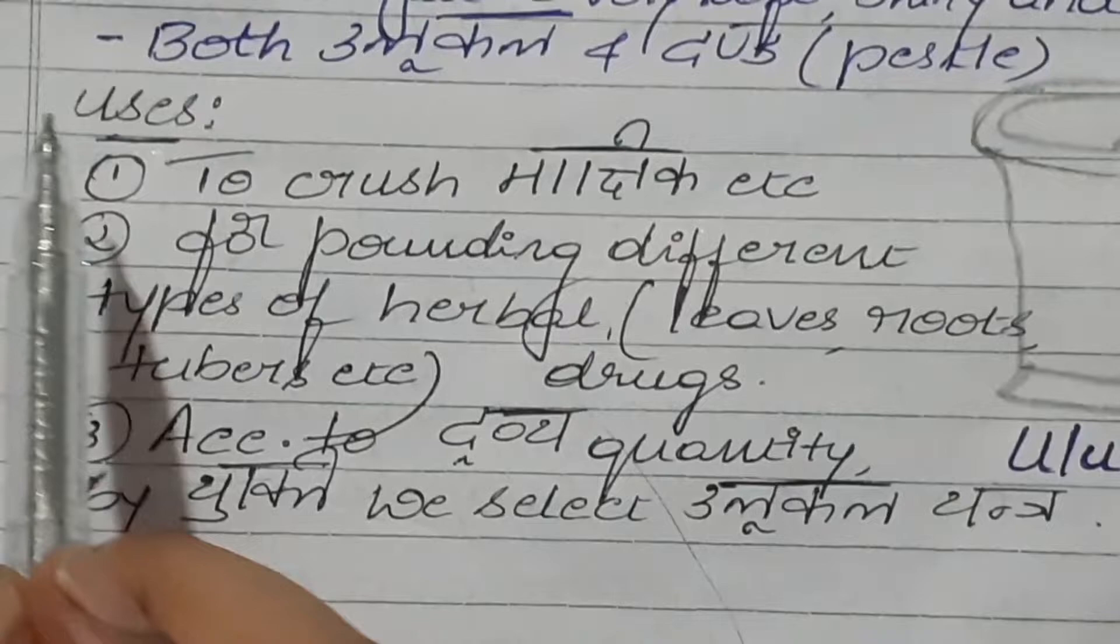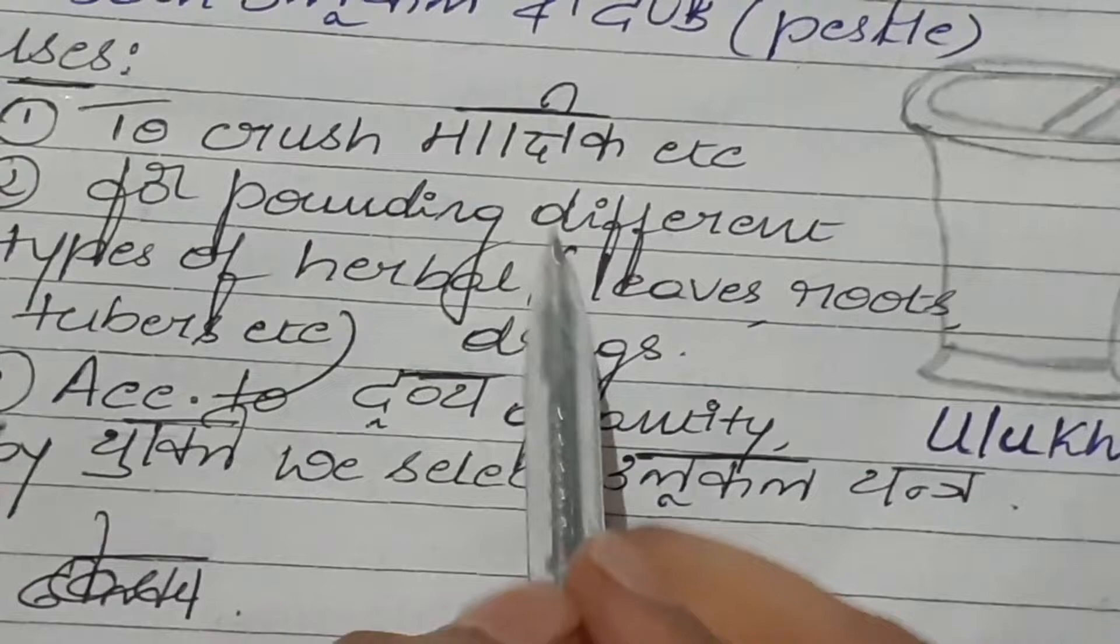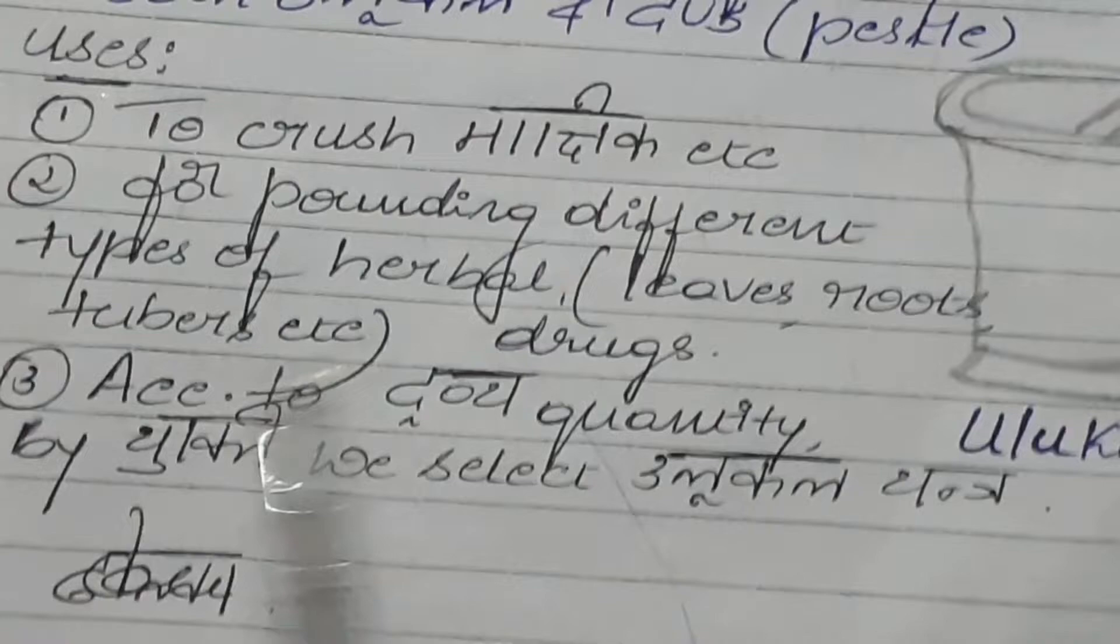Both Ulukala and Danda together are known as Ulukala Yantra. The instrument looks somewhat like this. Uses of Ulukala Yantra: to crush Markshika, etc., and for pounding different types of herbs like leaves, roots, tubers, etc.